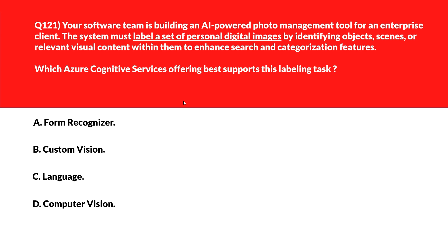Let's look at this question — we need to label a set of personal digital images by identifying objects. We'll first look at option A: Form Recognizer. Form Recognizer focuses on extracting fields and tables from scanned forms. It doesn't deal with image labeling, so this is incorrect.